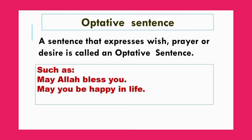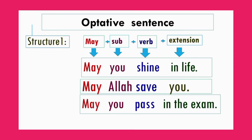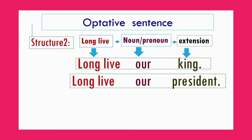Optative sentence: a sentence that expresses wish, prayer, or desire is called an optative sentence. Such as: 'May you be happy in life,' 'May you shine in life,' 'May Allah keep you safe.' Part two: long live + noun — such as 'Long live our king,' 'Long live our president.'